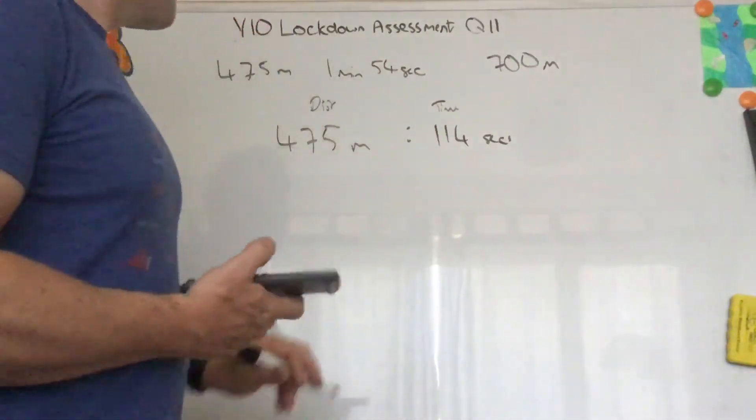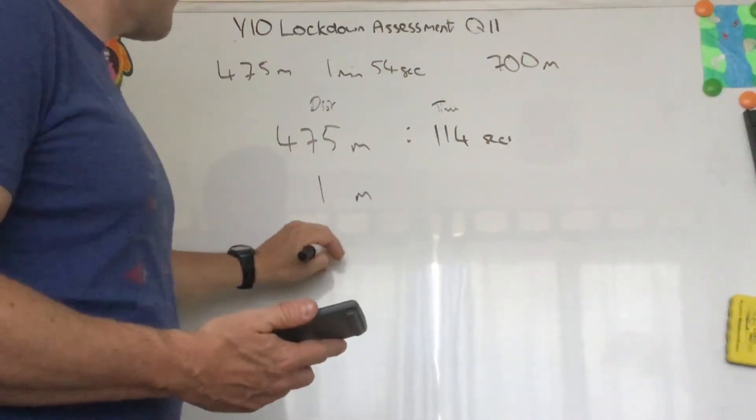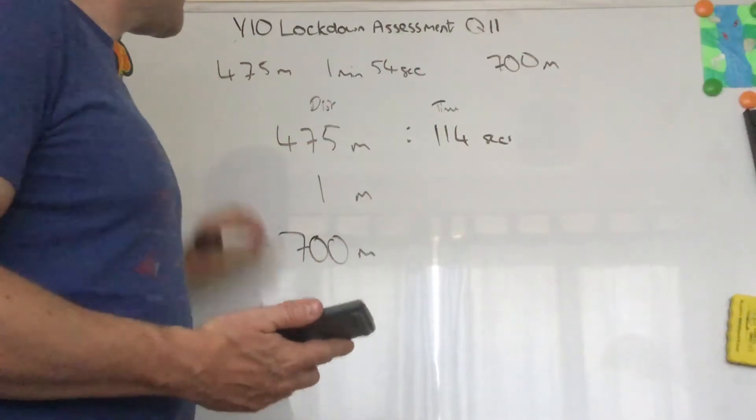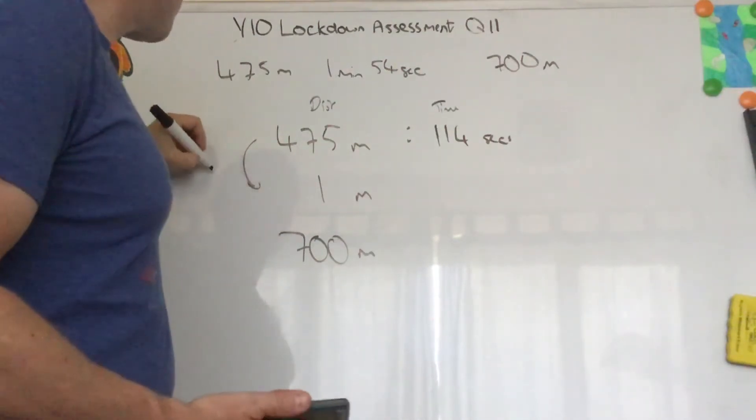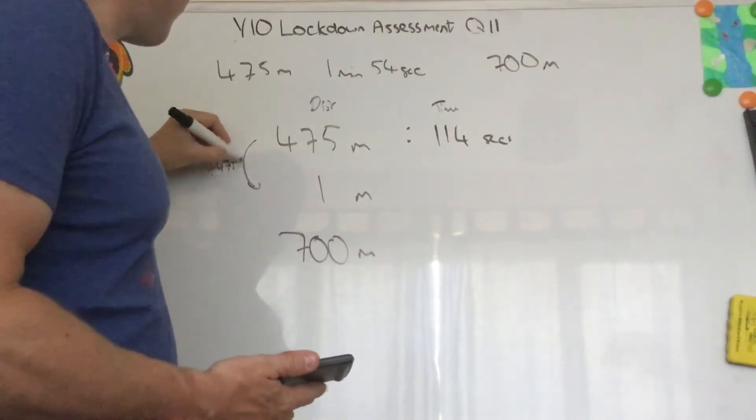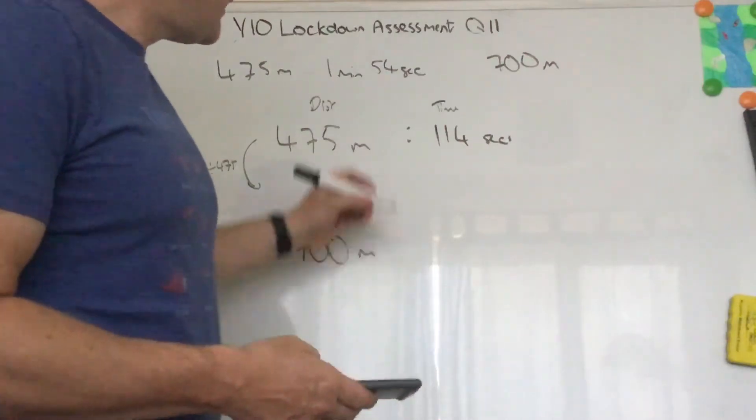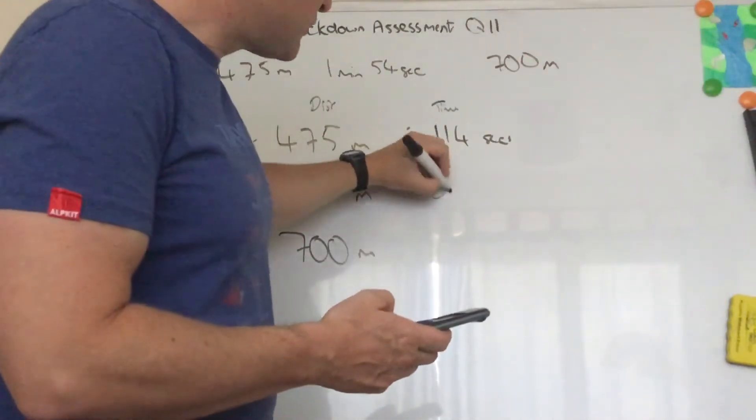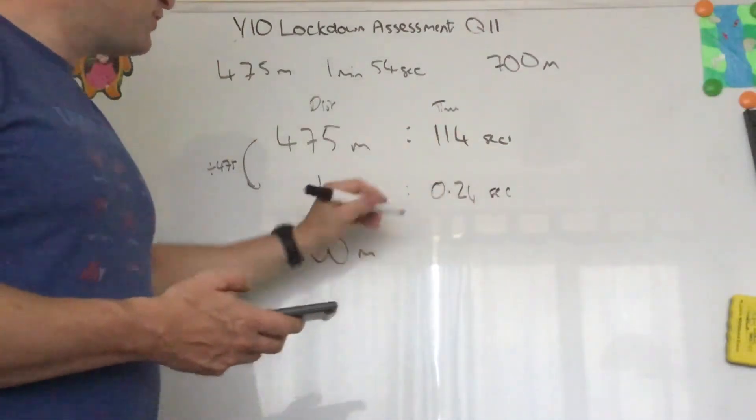So work out how long it'll take to do one meter, and then we can work out how long 700 meters takes her. So to get from 475 meters to one meter, we just divide by 475. So 114 divided by 475 is 0.24. So it should be one meter in 0.24 seconds.